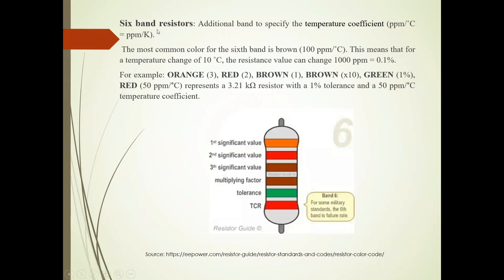So we can take 6 band resistor. So additional band to specify temperature coefficient. Now see. The most common color for 6th band is brown, 100 ppm per degree Celsius. This means that for a temperature change of 10 degree Celsius, the resistance value can change 1000 ppm or 0.1%. Now see here.